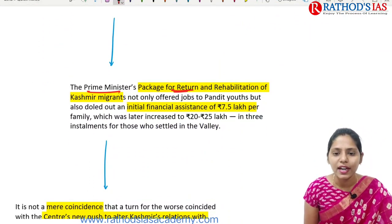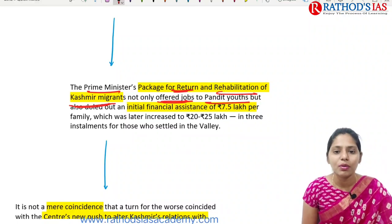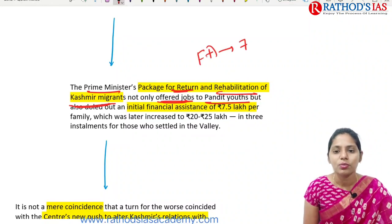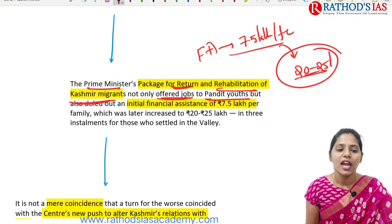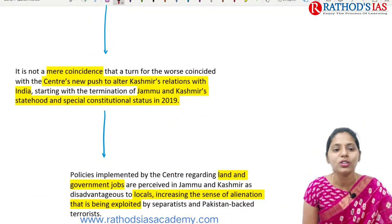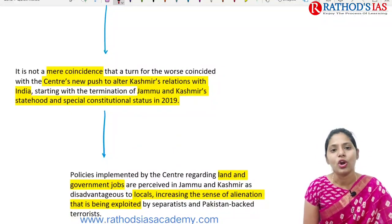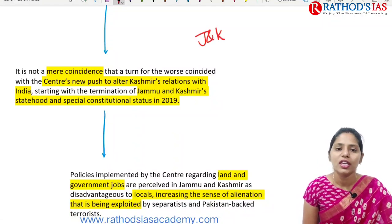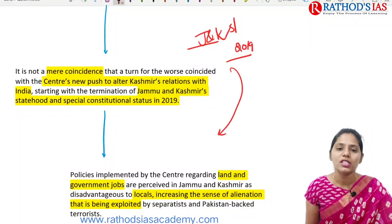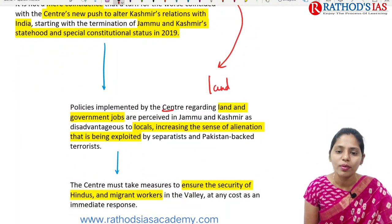The Prime Minister's package for the return and rehabilitation of Kashmir migrants not only offered jobs to Pandit youth but also provided initial financial assistance of about ₹7.5 lakh per family, later increased to ₹20–25 lakh in three installments. The central government also came up with the termination of Jammu and Kashmir's statehood and special constitutional status in 2019.